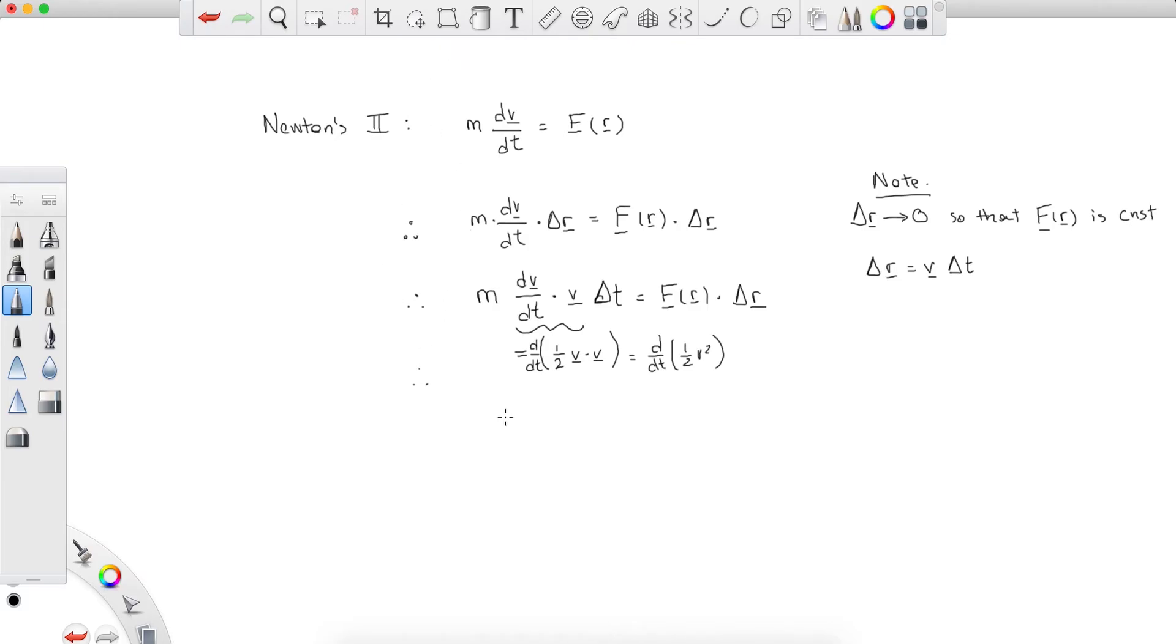Very simple. So we get that m d/dt of one-half v squared delta t is equal to F of r times delta r. And let's just draw a visual to understand what this means. What does this mean? What are we doing in this derivation?